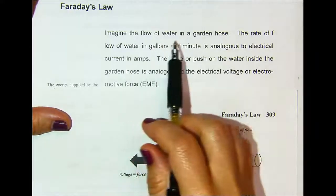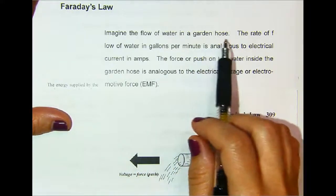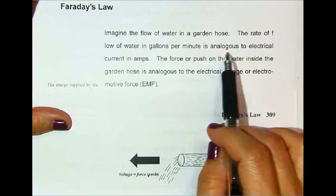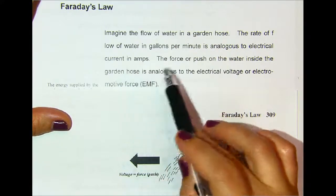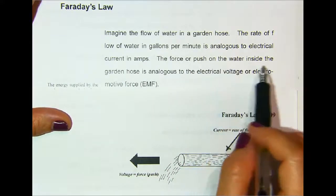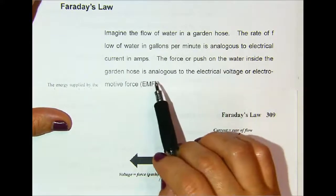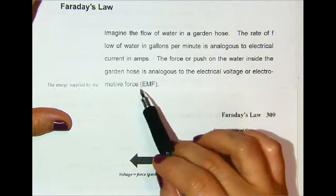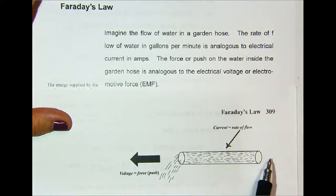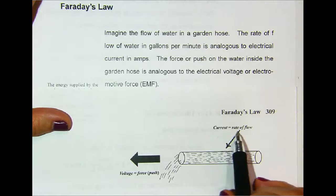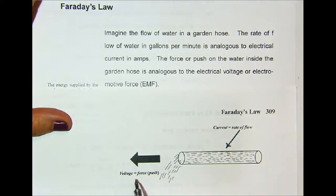Faraday's Law — imagine the flow of water in a garden hose. The rate of flow of water in gallons per minute is analogous to electric current in amps. The force or push on the water inside the garden hose is analogous to the electrical voltage or electromotive force — the current equals the rate of flow and the voltage equals the push force.